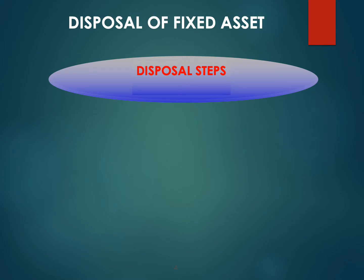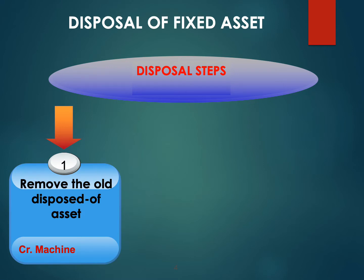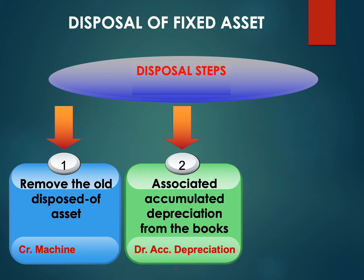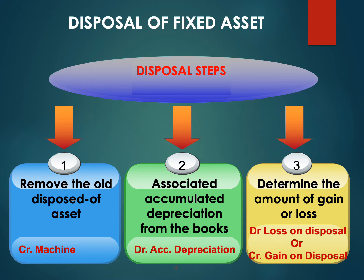Under disposal of fixed asset, we have three steps on disposal. The first one, we have to remove the old fixed asset — we have to dispose of the asset, which means we credit the machine or credit the old asset. The second one, remove the associated accumulated depreciation from the book, which means we debit the accumulated depreciation. And the third one, to determine the amount of gain or loss, you have to debit loss on disposal or credit gain on disposal.